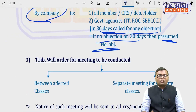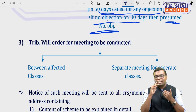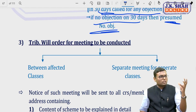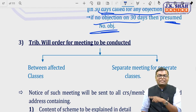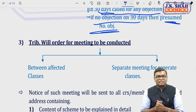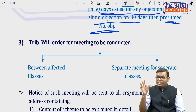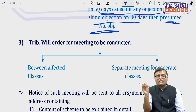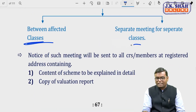The tribunal will order a meeting to be conducted. Remember, it will not be one combined meeting — separate meetings will be held for members and creditors. Among creditors, different classes will have separate meetings. For example, 6% debenture holders will have a separate meeting from 7% debenture holders. Separate meetings are held between affected classes.